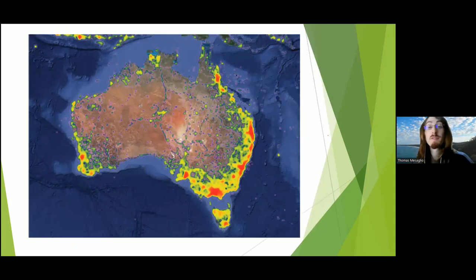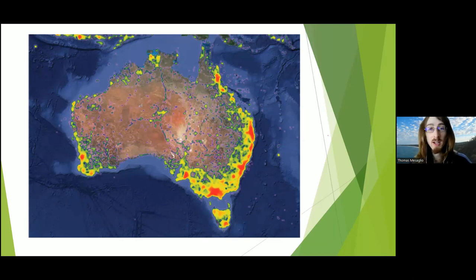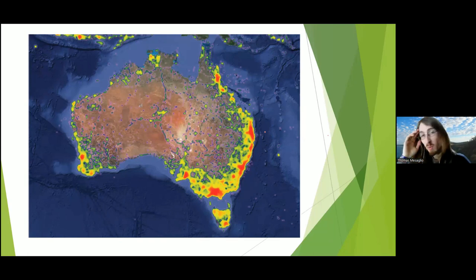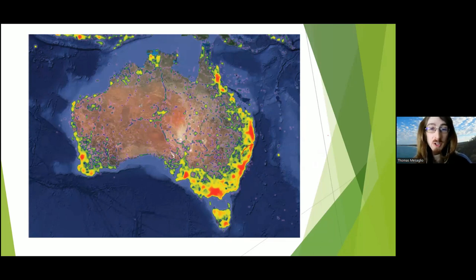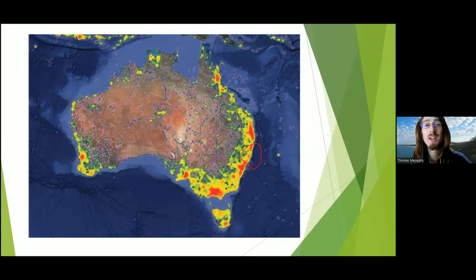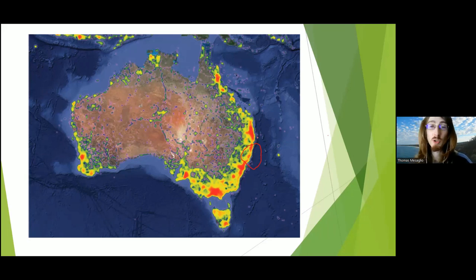This heat map shows where observations are distributed across Australia. Unsurprisingly, most hotspots are clustered around capital cities and population centers. One interesting thing is that some hotspots are driven by individual users. For example, the hotspot around Coffs Harbour is driven almost entirely by one user — Nick Lambert, a fantastic naturalist who has over 60,000 observations contributed just by himself.